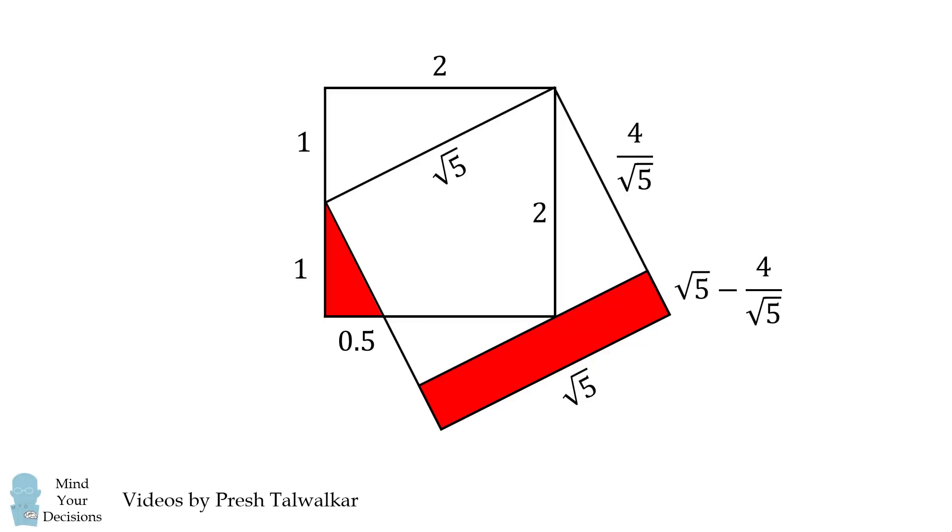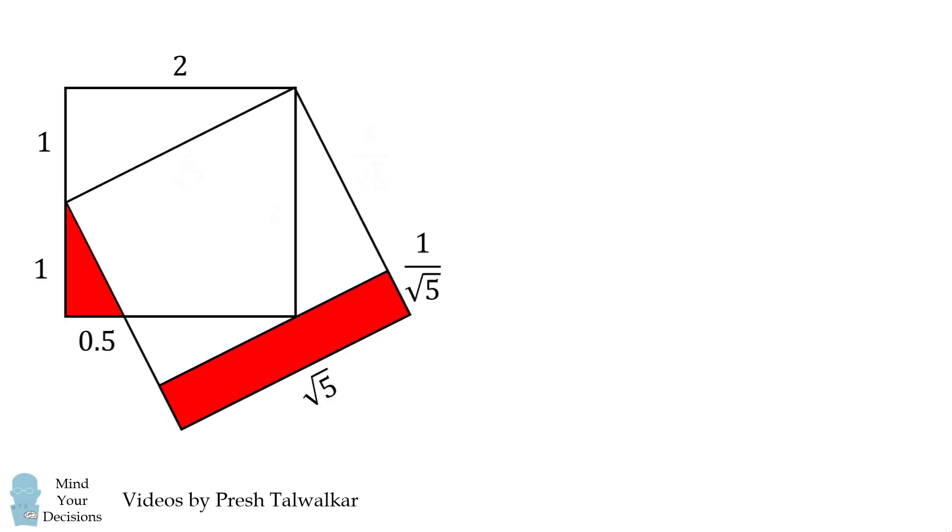As a result, we can solve that this length here will be the square root of 5 minus 4 over the square root of 5, which simplifies to be 1 over the square root of 5. We have all the necessary lengths to solve this problem.